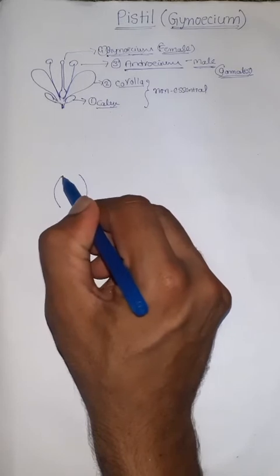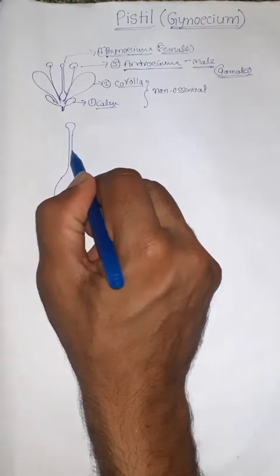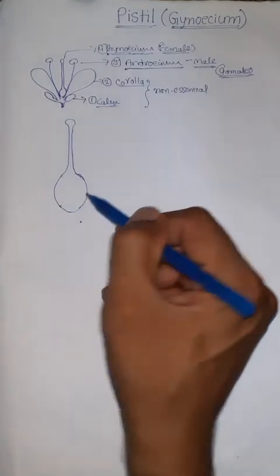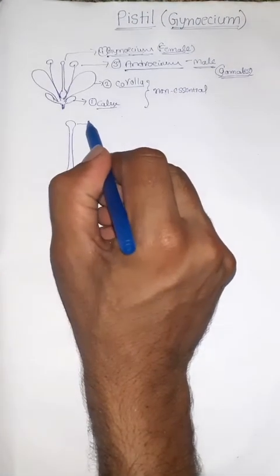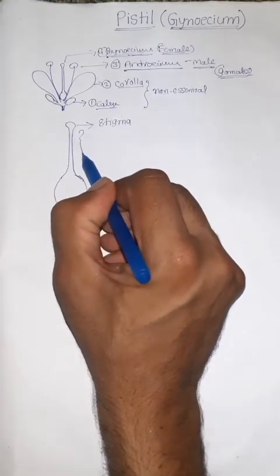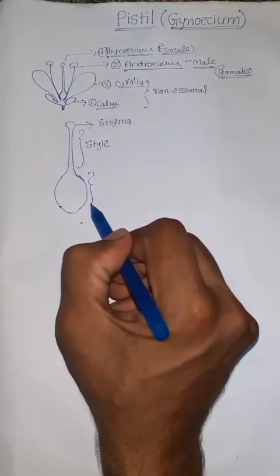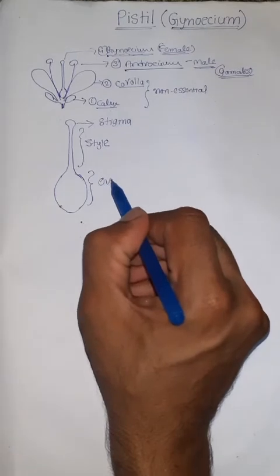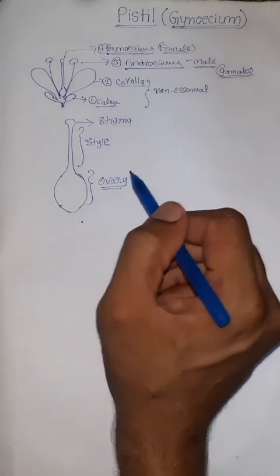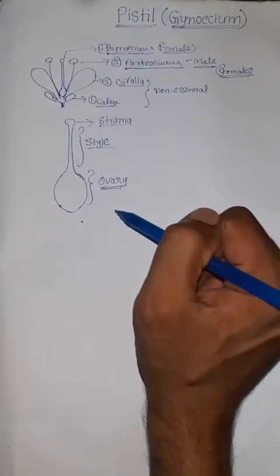The Pistil is the innermost whorl in the flower and consists of three parts. The apical tip is called Stigma. This elongated tube-like structure is called Style. The basal swollen structure is called Ovary. A typical angiospermic Pistil consists of three parts: Stigma, Style, and Ovary.